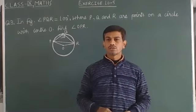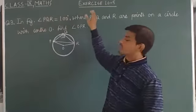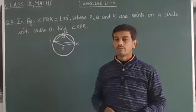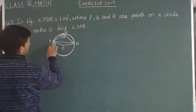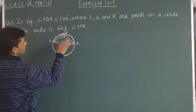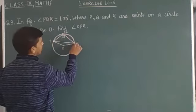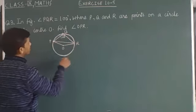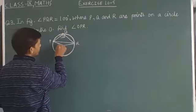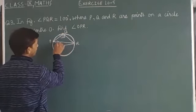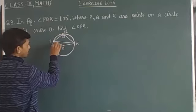Let's discuss question number 3 of exercise 10.5. It states that in triangle PQR, angle PQR is 100 degrees, where P, Q, R are points on a circle with center O. For this we have to find angle OPR — the required angle we have to calculate here.